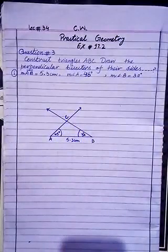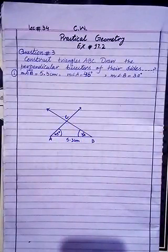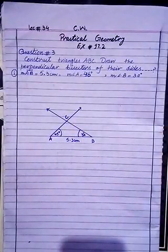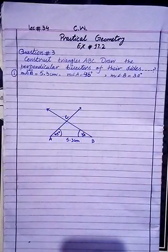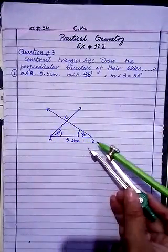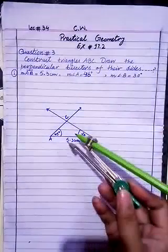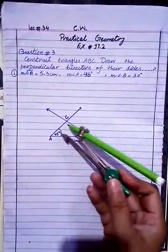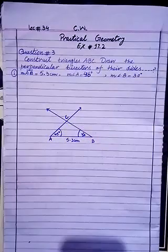This intersection point is named as C. Now we work on the perpendicular bisectors. Bisector means divide into two equal parts. The triangle has three sides: the first side is AB, the second side is BC, and the third side is AC.